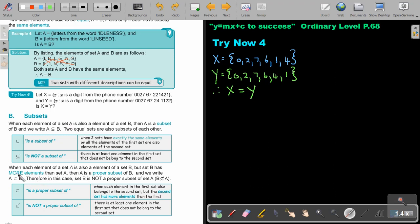Let's go take it a bit further. When each element of set A is also an element of set B, but set B has more elements than set A, then A is a proper subset of B, and we write it. Now we don't put the equal sign. If it's exactly the same elements, we put the equal sign and call it subset. But if it's just part of the whole set, then we don't put the equal sign, but we call it proper subset. When each element in the first set also belongs to the second set, but the second set has more elements than the first. If it's not, then we just put the cross. There is at least one element in the first set that does not belong to the second set. Let's look at an example.